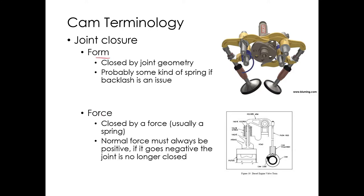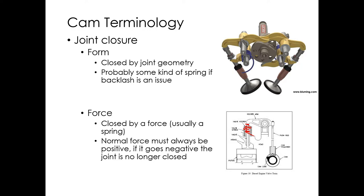Joint closure: form means the joint is closed by geometry; force means it's closed by force. In automotive applications cams are usually force-closed by the valve spring. There are some form-closed applications, like a Ducati setup with a follower on each side of the cam. Ducati is about the only company that does form-closed valve trains. A limiting factor on spring technology is RPM — at some point the spring isn't stiff enough to keep the follower in contact, causing valve lofting where the valve gets thrown off the rocker and comes crashing back, causing wear.